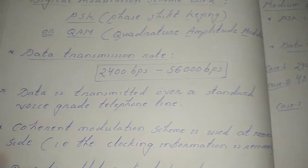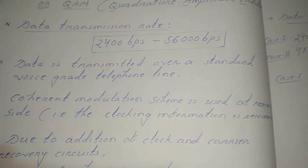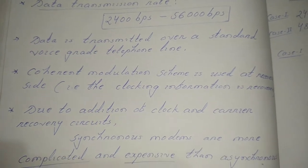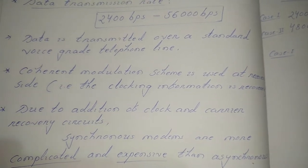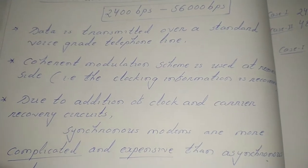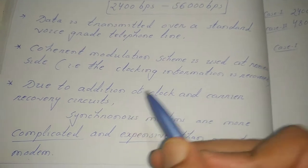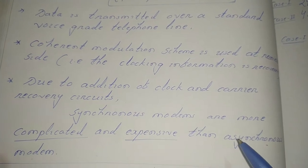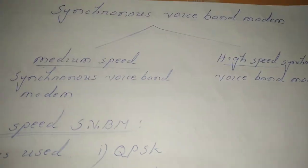Data is transmitted over a standard voice grade telephone line. Here, a coherent modulation scheme is used. In the case of asynchronous modem, a non-coherent modulation scheme is used — meaning at the receiver side no clocking information is recovered. But in synchronous voice band modem, the clocking information is recovered at the receiver side. For that purpose, an additional clock and carrier recovery circuit is used, which is why synchronous voice band modems are more complicated and expensive compared to asynchronous voice band modems.